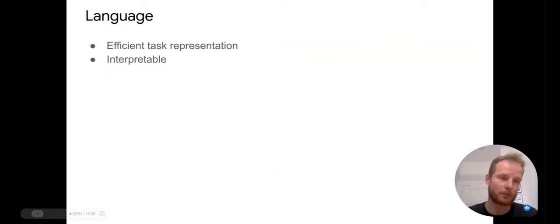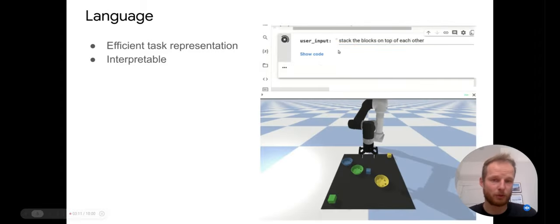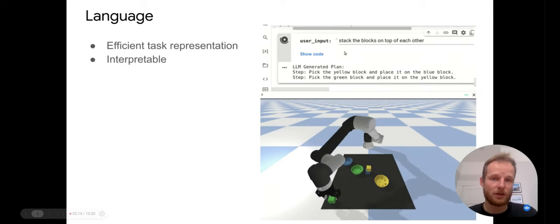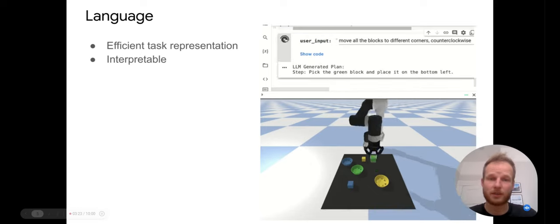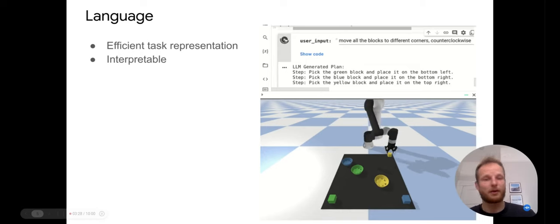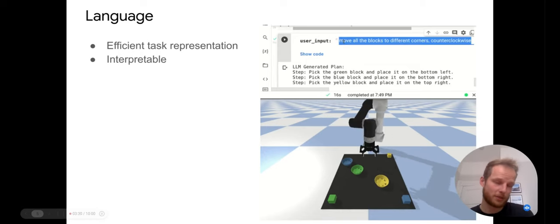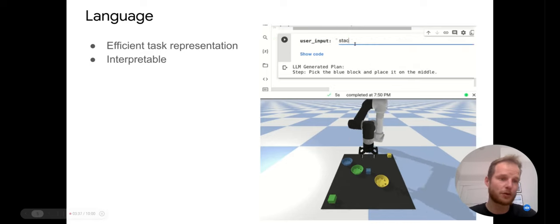Secondly, language is very interpretable. If we put language at the center of what we do in robotics, not only will we be able to describe to the robot what we want it to do, but we would also be able to see what the robot is currently thinking. For instance we can ask it to plan the next steps and those steps will be described in natural language — we can just see that a plan is being generated, the robot picks one block, places it, picks another, and so on. It's not only easier to debug but also much more interpretable for future users.